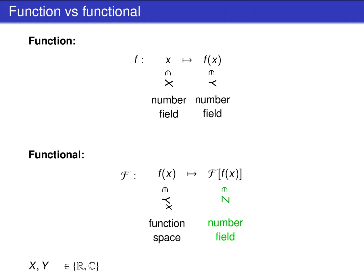The value that the functional assigns to a function is an element of a number field z. This number field can again be the real or complex numbers. As we have seen, a functional maps from a function space to a number field.